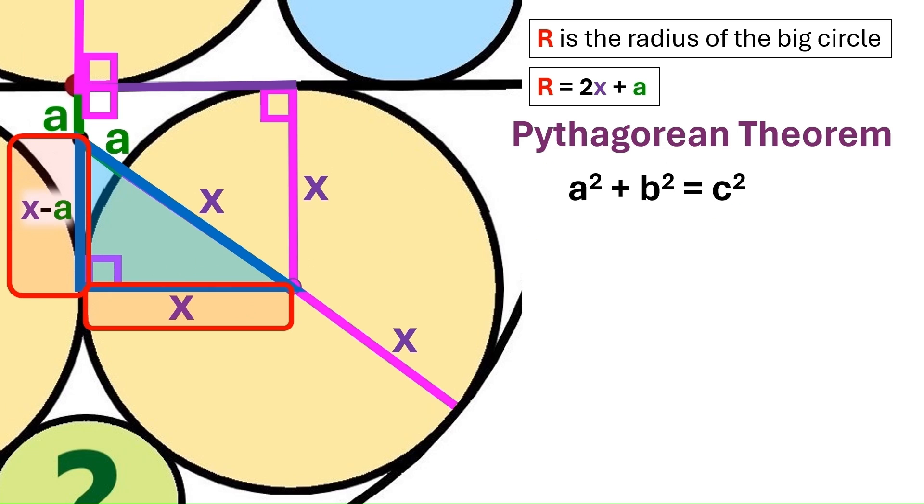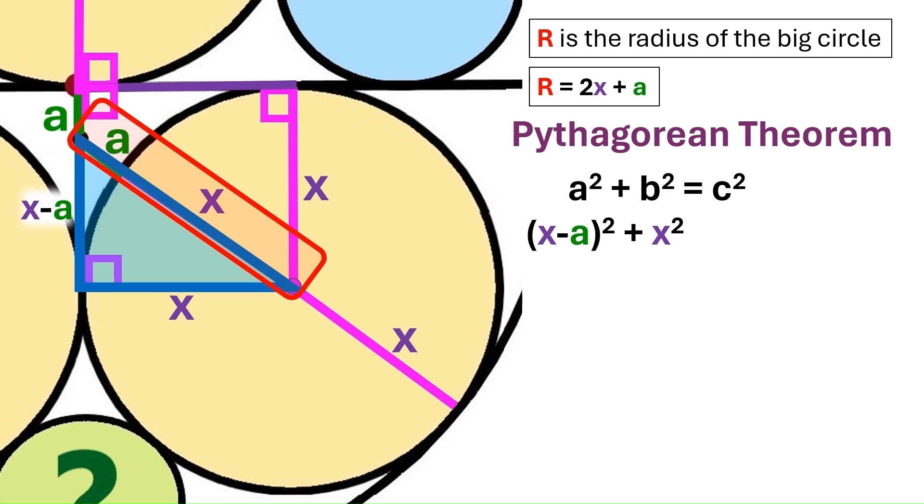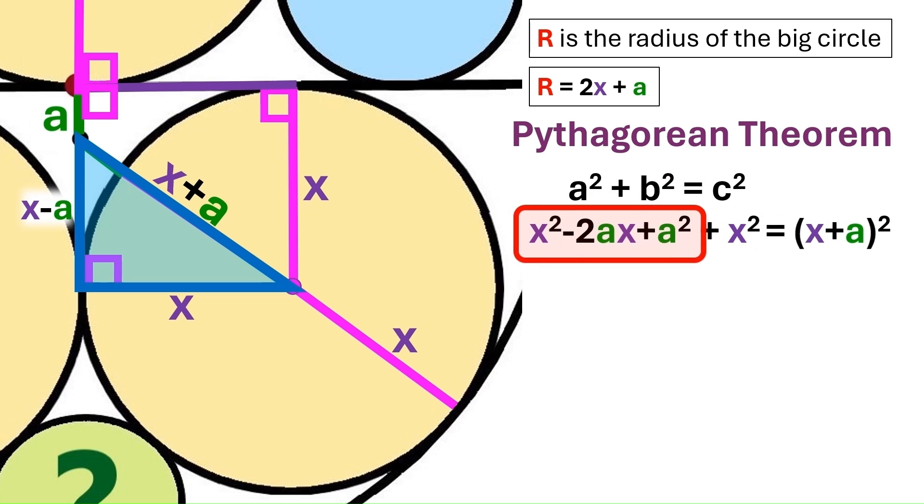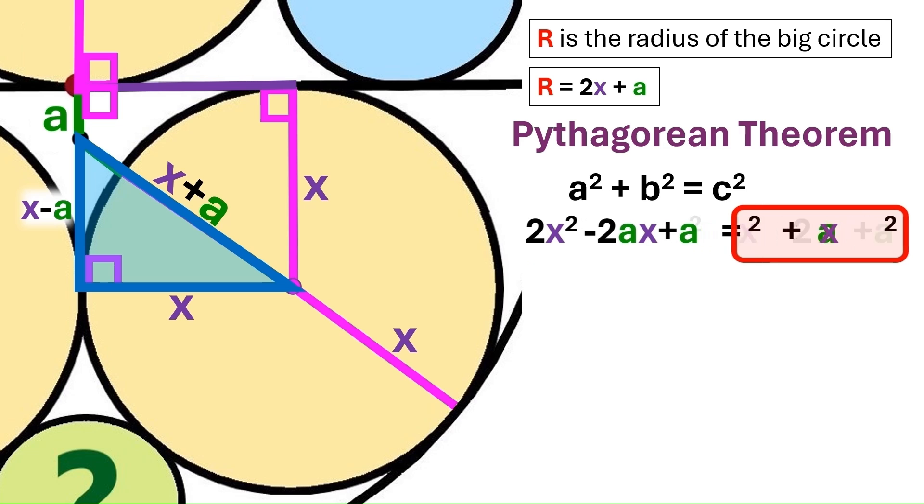These are the shorter sides of our right triangle, so let's take their squares. And this is the longer side, and it's got a total length of x plus a. So we'll take the square of that as well. Let's open up these brackets first, and we get this. And we can take these two and add them up to get 2x squared. And we can open up these brackets like this.